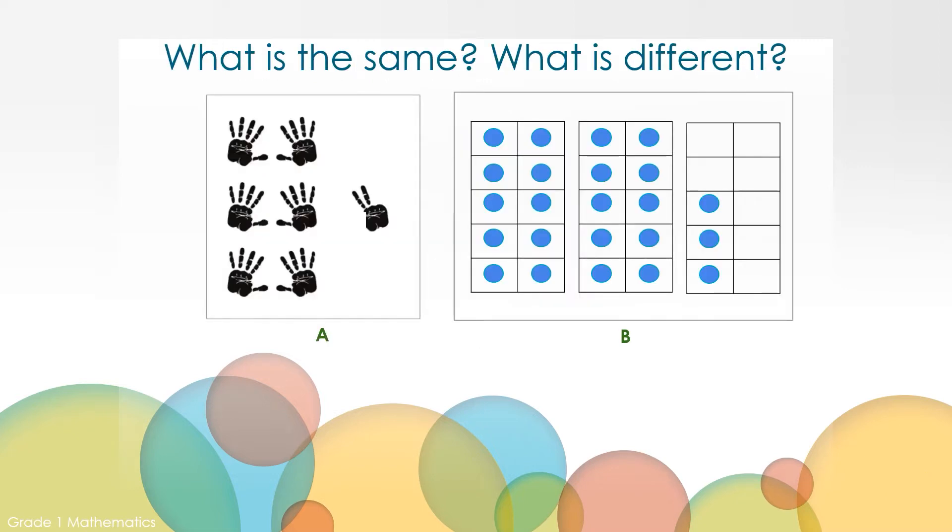Take a moment and look at picture A and picture B. What is the same but different? There are many ways that picture A and picture B are the same and are different. One way they are different is picture A represents a number using hands and fingers and picture B represents a number using ten frames.